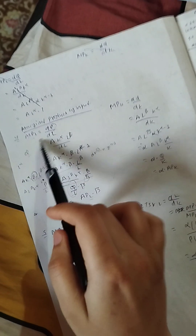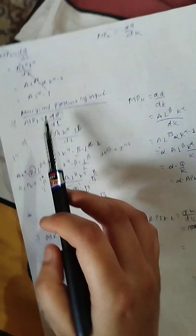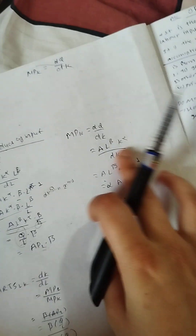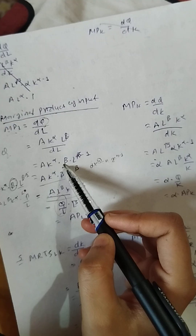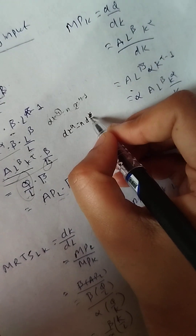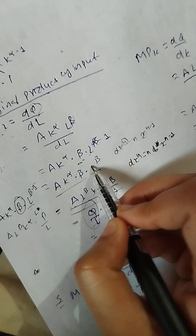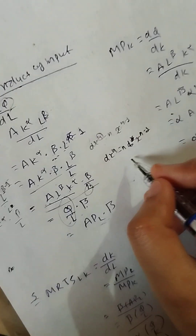Now we have to learn MPL. MPL equals delta Q by delta L. Given Q = A · L^β · K^α, we differentiate with respect to L. Using the power rule - where d/dx of x^n equals n·x^(n-1) - we get MPL = A · β · L^(β-1) · K^α. Similarly, MPK = A · L^β · α · K^(α-1).